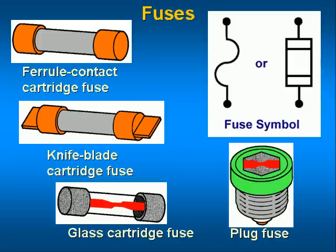If you measure the source voltage across a fuse, then it is blown. If you remove a fuse from the circuit and measure the resistance and find it to be infinite, then the fuse is blown.